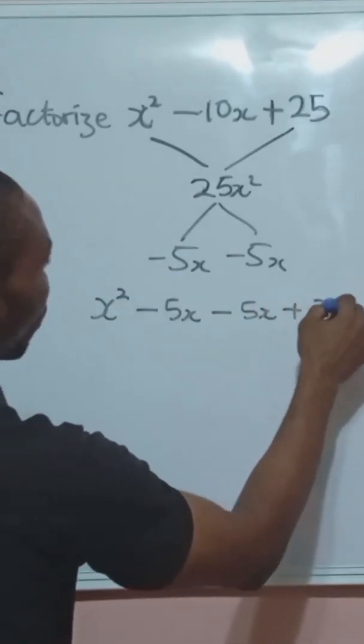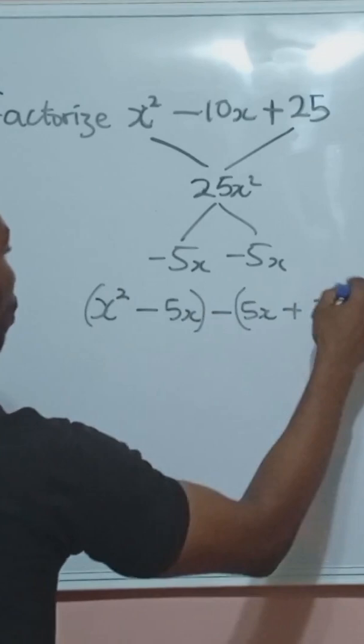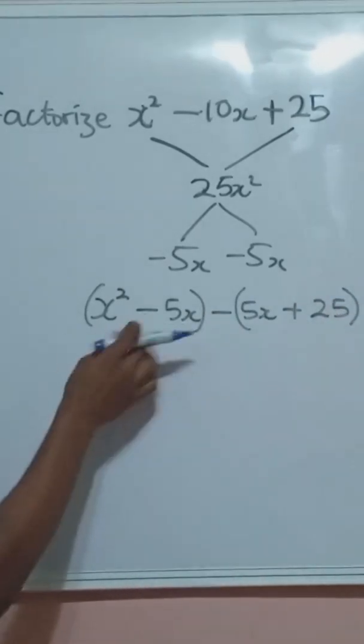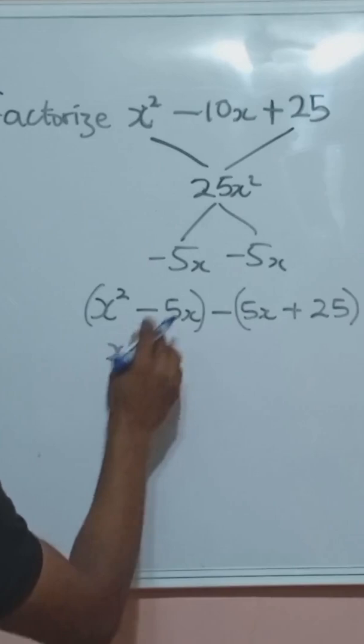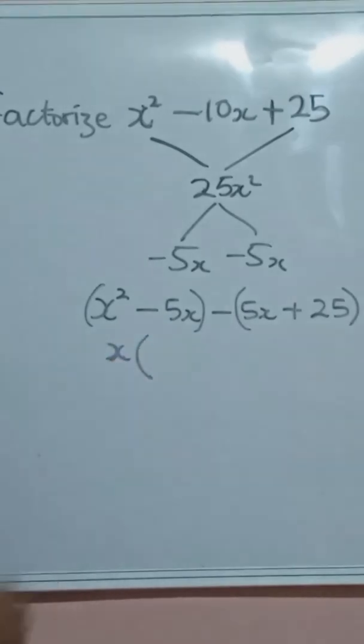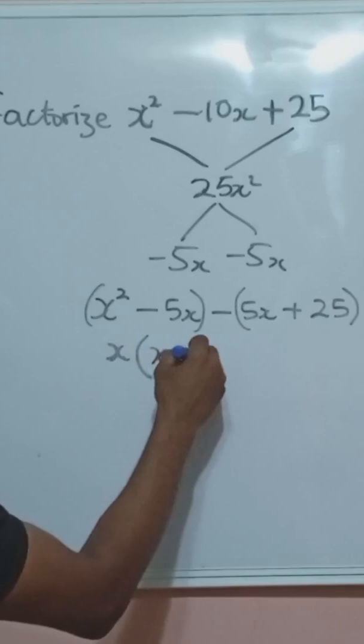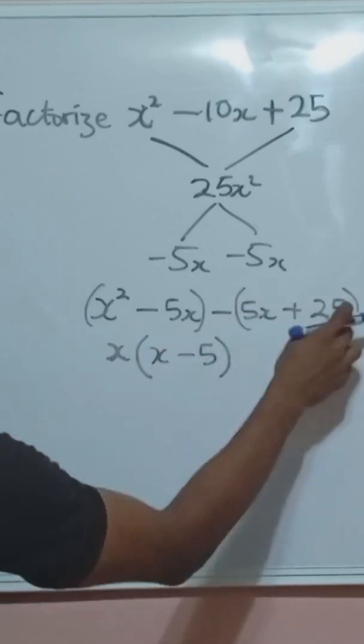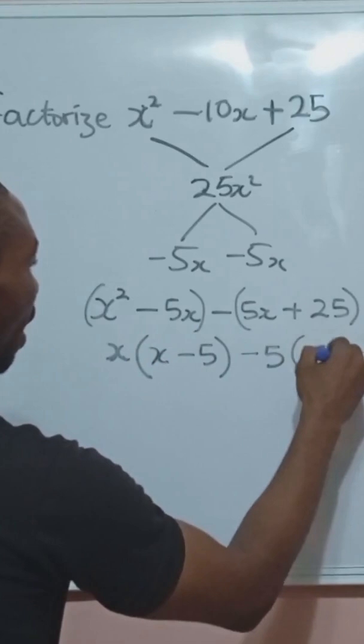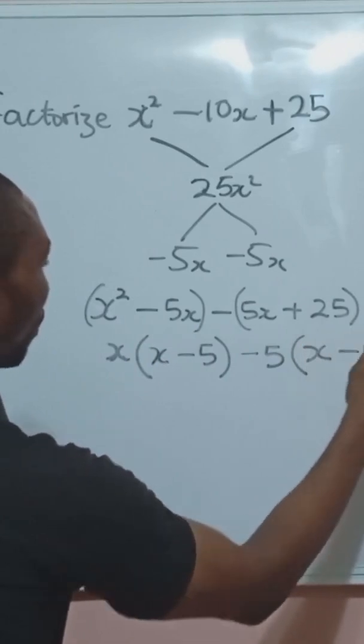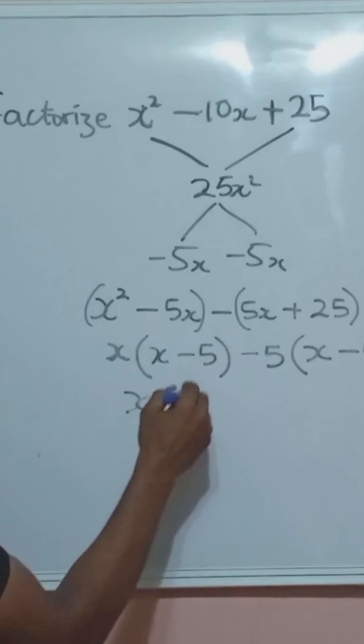x plus 25. Now grouping these two together, what's common here is x. If we factor out x from here we are having x minus 5. What's common here is 5, brackets x minus 5.